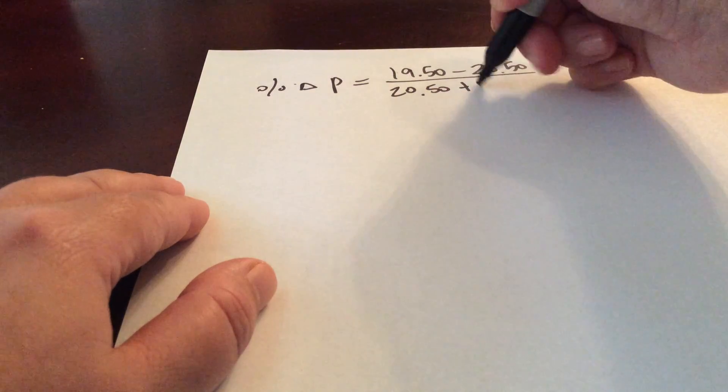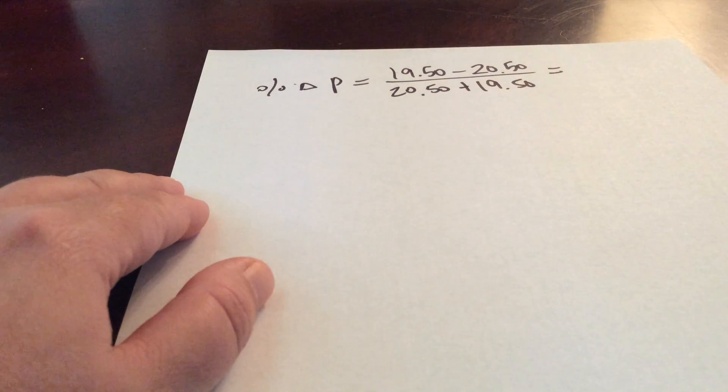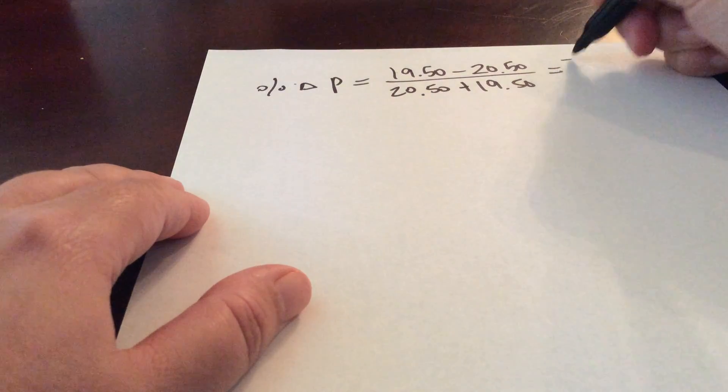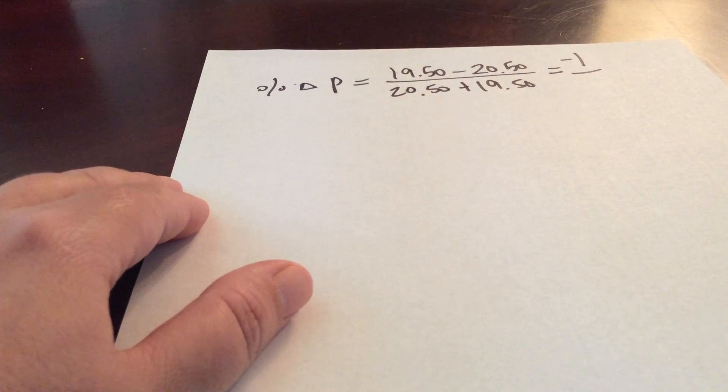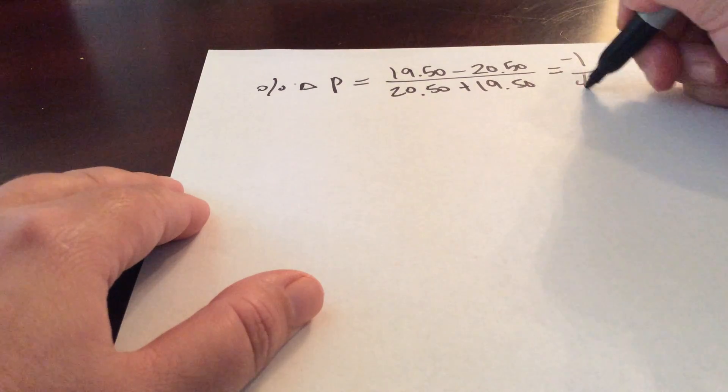And we'll add them together on the bottom. So $19.50 minus $20.50 is minus 1. $20.50 plus $19.50 is $40.